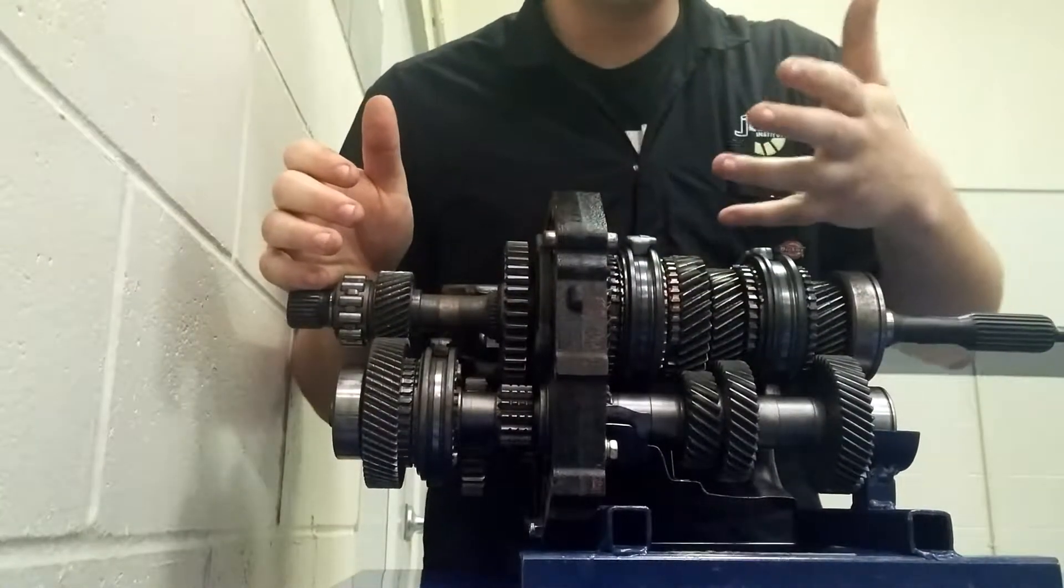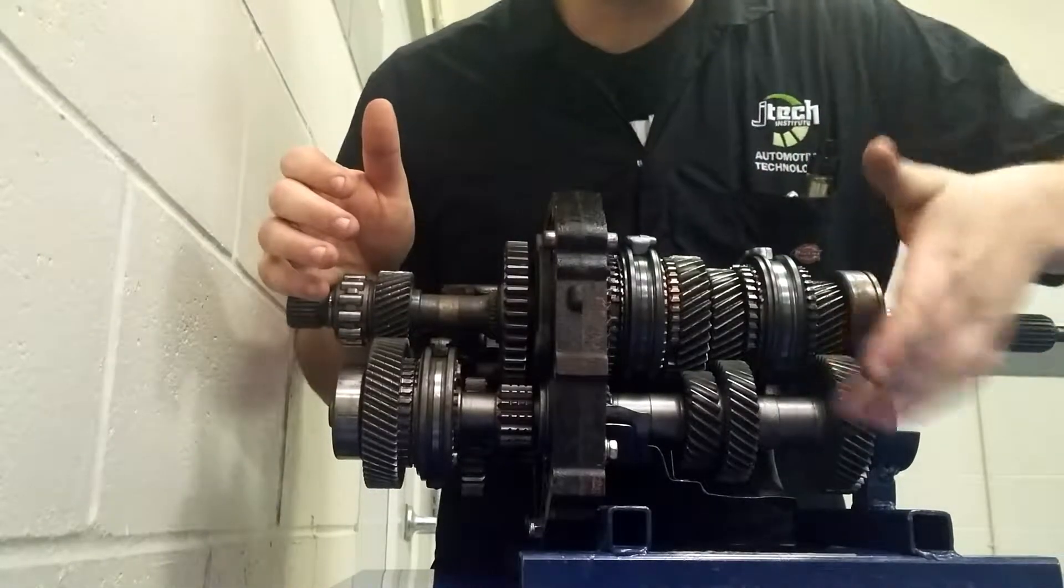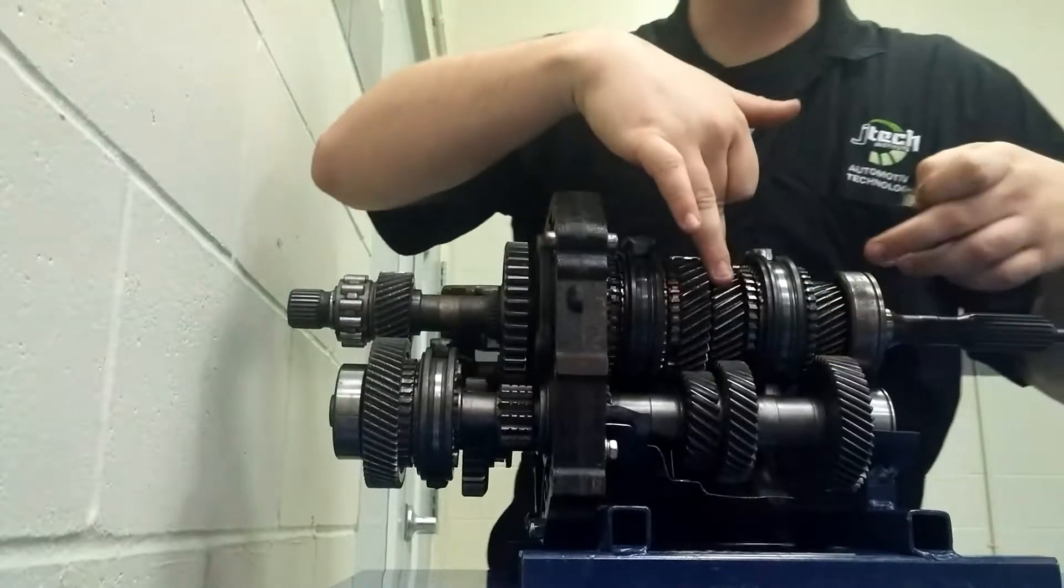It's pretty much the same way for first, second, and third. Comes in, goes down to the counter shaft, and then comes up whichever gear you're locked into.